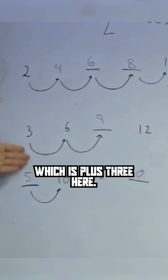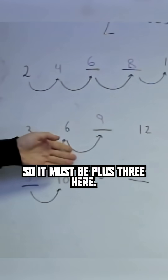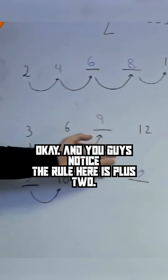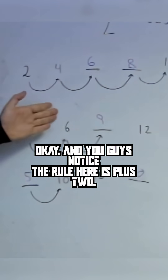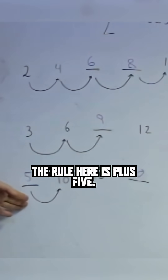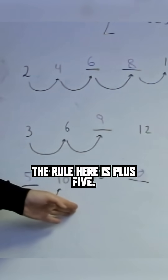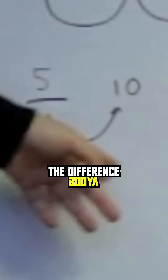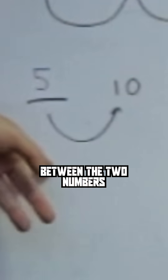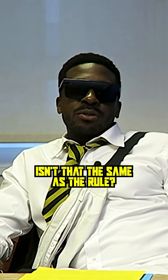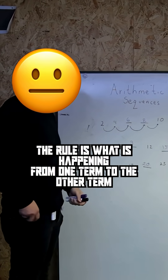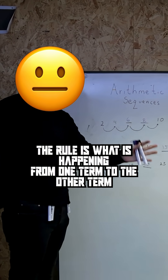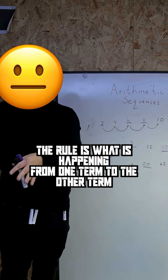The rule is plus three here, so it must be plus three here. And you guys notice the rule here is plus two, the rule here is plus five. This arrow symbolizes the difference between the two numbers. Is it not the same as the rule? No — the rule is what is happening from one term to the other term.